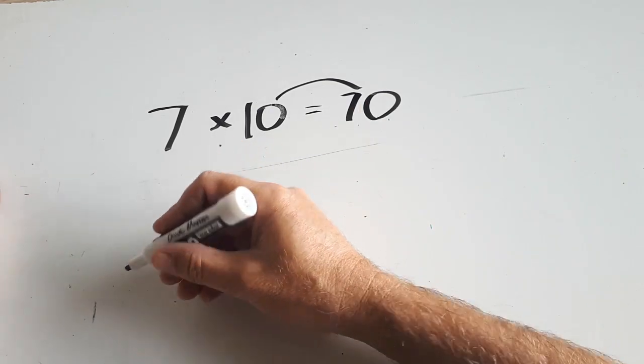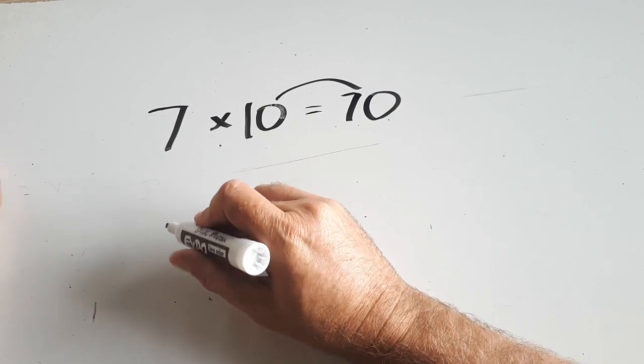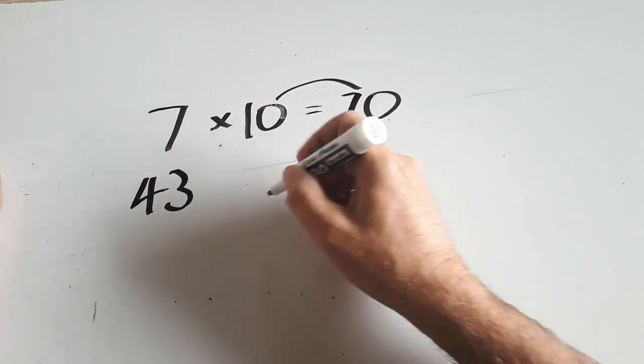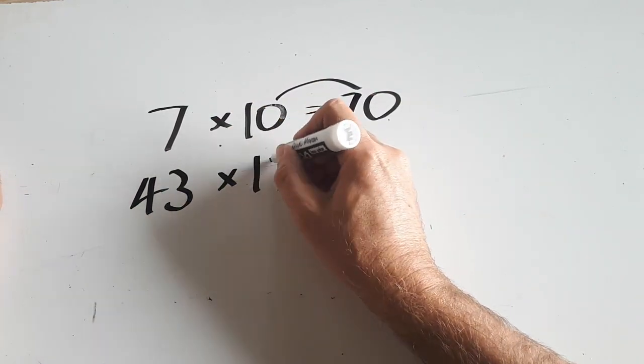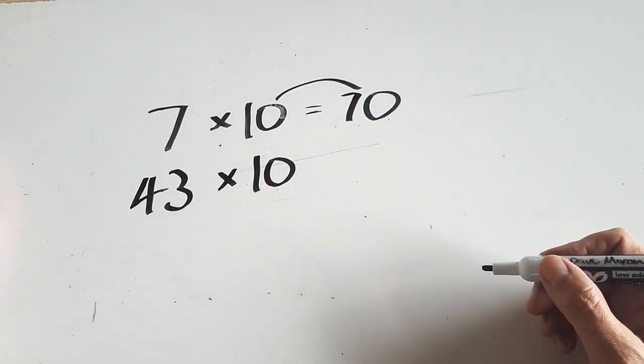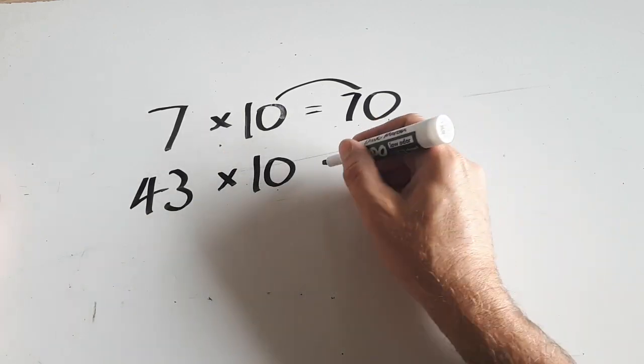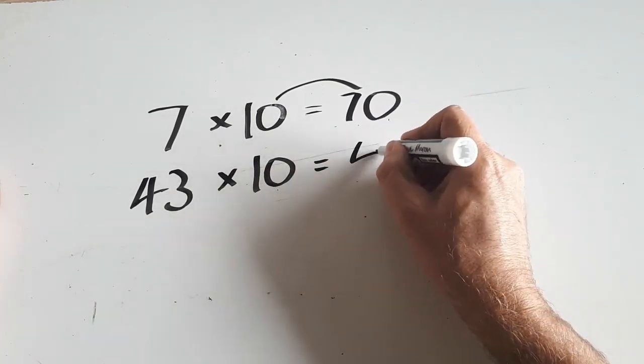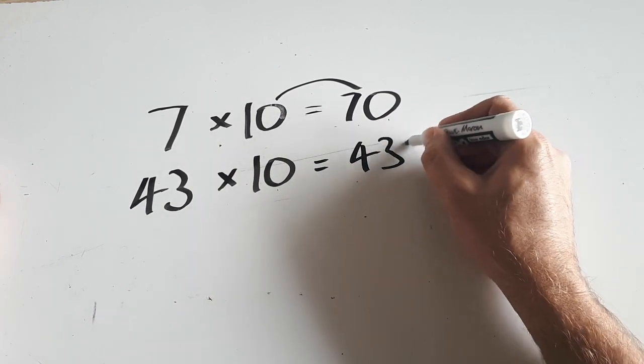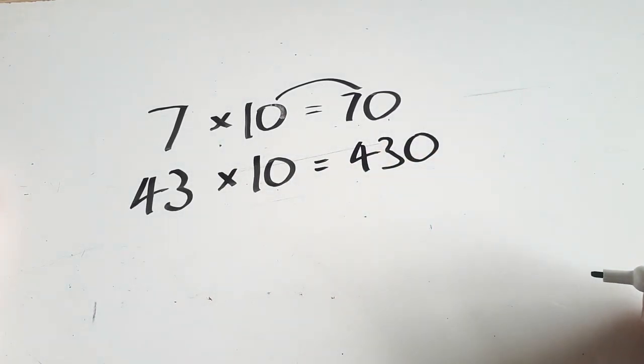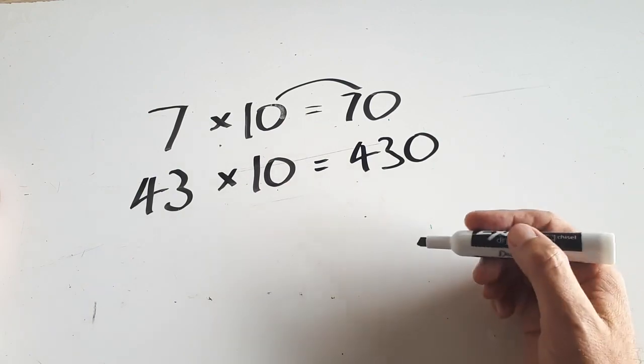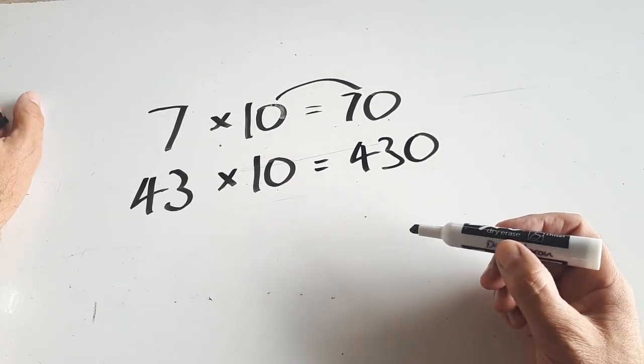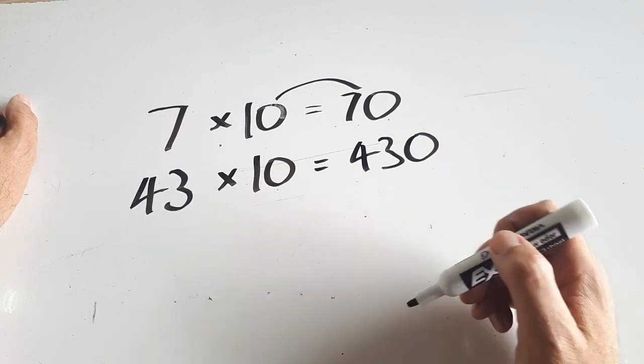First, let's look at some more complicated numbers and multiplying those by 10. If you had 43 times 10, you can use the same sort of theory as we did with the 7. It's nice and easy. We know it's going to be 43 tens. 430 is our answer. And pretty much on and on, you can multiply any number by 10, even if it's quite large.